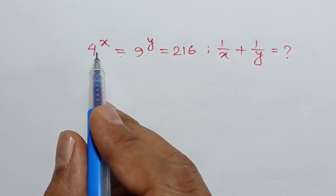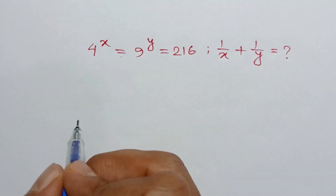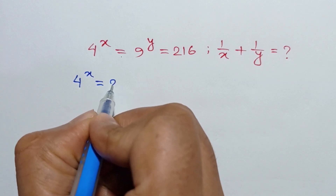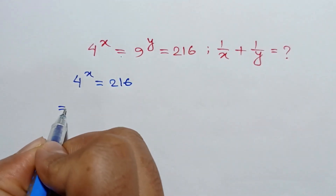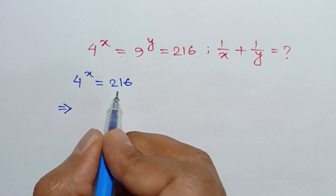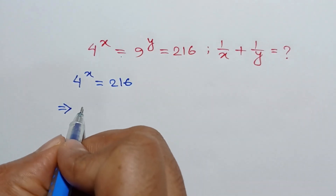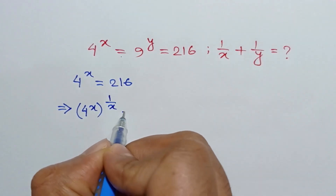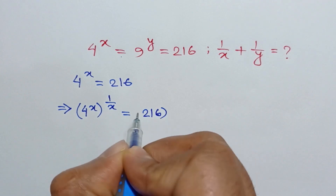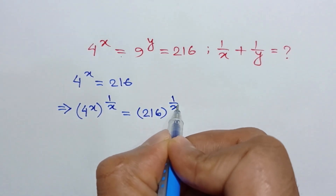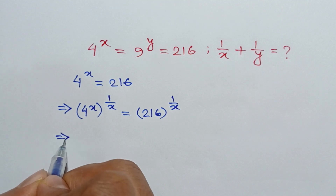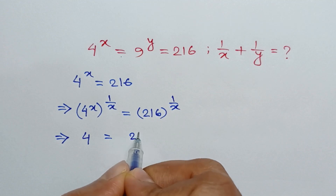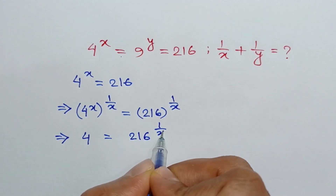From here we can write 4 to the power x is equal to 216. If we raise both sides to the power 1/x, we will have 4 to the power x, whole to the power 1/x, is equal to 216 whole to the power 1/x. The x's cancel out, so it will be 4 is equal to 216 to the power 1/x.